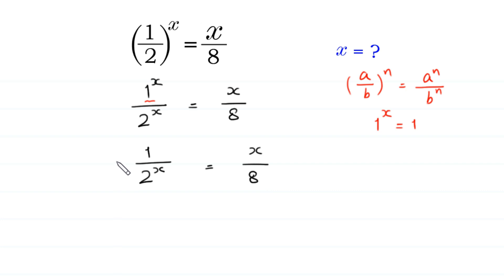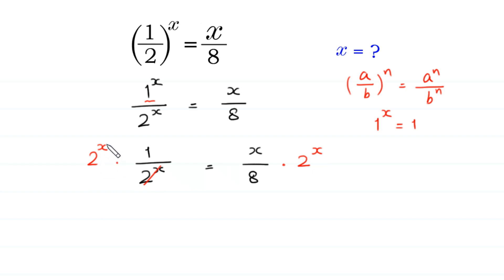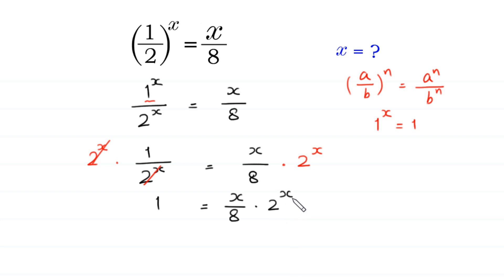Now, we multiply both sides of this equation by 2^x. On the right side, we also multiply by 2^x, so the 2^x cancels with the 2^x in the denominator. On the left side, we are left with 1 is equal to x over 8 times 2^x.